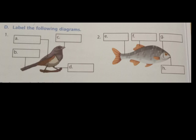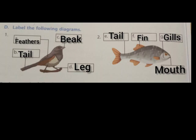Section D — label the following diagrams. You can see two pictures: first one is a bird and second one is a fish. For the bird: A is feather, B is tail, C is beak, and D is leg. For the fish: E is tail, F is fin, G is gills, and H is mouth.